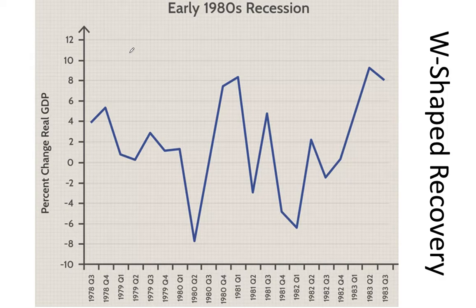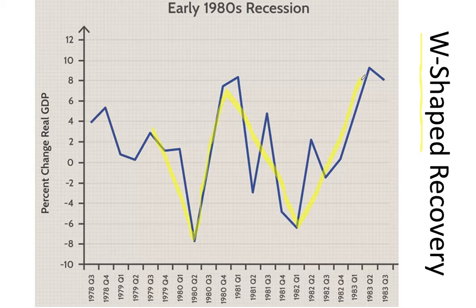The next letter people like to talk about is the W-shaped recovery. Here the economy goes down, it goes back up and people think it has fully recovered, and then it goes back down again before it finally goes up. So in a W-shaped recovery you sort of have two recessions and then two recoveries. This happened in the early 80s here in the United States.